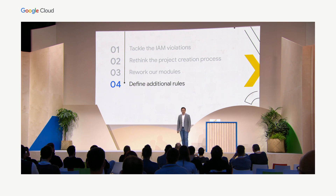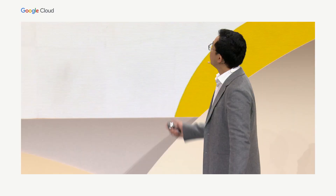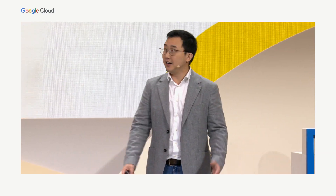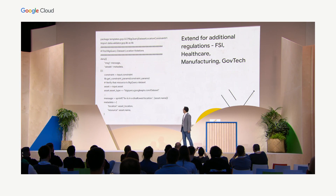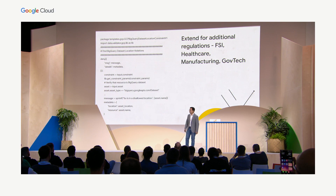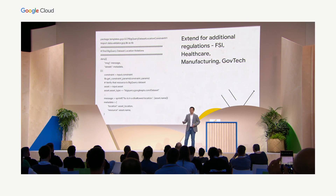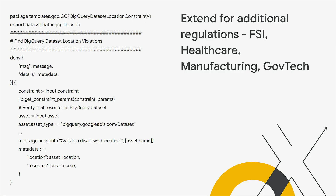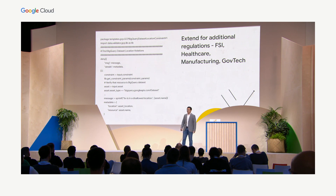Lastly, we started to think about extending further and defining additional rules. For example, we have many customers in FSI, healthcare, and manufacturing, and all of them have different data locality requirements. So creating location violations — understanding that some datasets can only sit in certain locations — gives you a way to verify data is only in the right area. You can do the same for GKE clusters, Cloud Storage buckets, and so on. If a developer does something wrong, they will be notified when you do the next scan. This makes it very easy to adopt a policy-as-code approach, which works better than merely maintaining a bunch of rules as documentation.